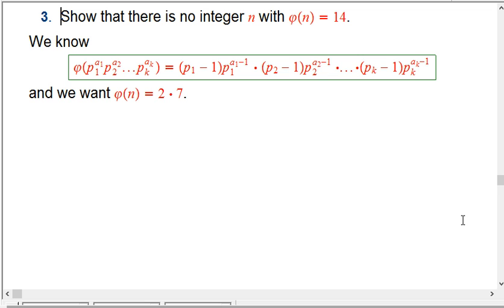So there's no way you can, if somebody says I'm thinking of an integer n and the number of numbers relatively primed to it between 0 and n minus 1 is exactly 14, that's actually impossible. Or another way to say it is there's no number such that the number of reduced residues is exactly 14.